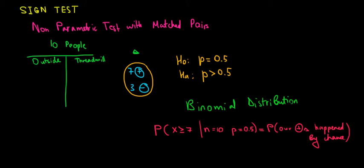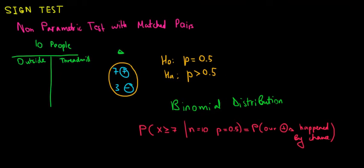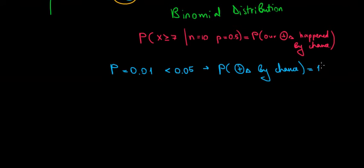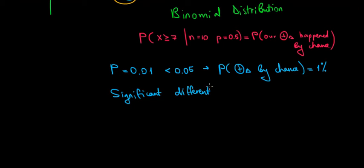Mechanically, we check whether this probability is higher or lower than the alpha of five percent. The intuition is: if this probability is really low — for example, if the p-value equals 0.01, which is less than 0.05 — then the probability of having these positive differences by chance is just one percent. That's very unlikely to have happened by chance, which means we have evidence of a significant difference between running outside and on a treadmill.